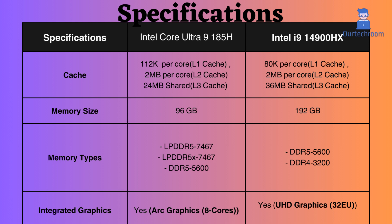The Intel i9 can support up to 192 gigabytes of memory, whereas the Intel Core Ultra supports only up to 96 gigabytes. The Intel Core Ultra 9 CPU, with support for LPDDR5 and DDR5 memory, is significantly better than the Intel i9-14900HX CPU, which supports only DDR5 and older DDR4.